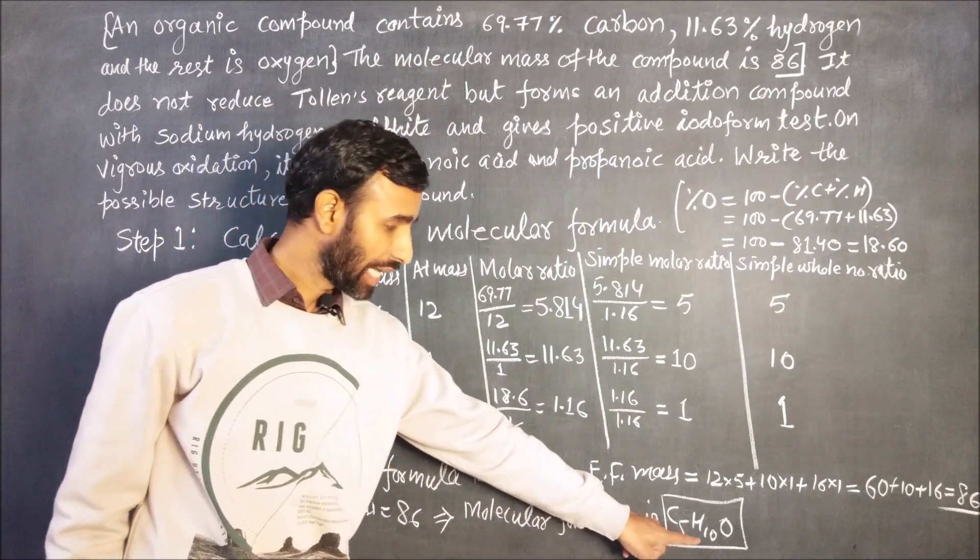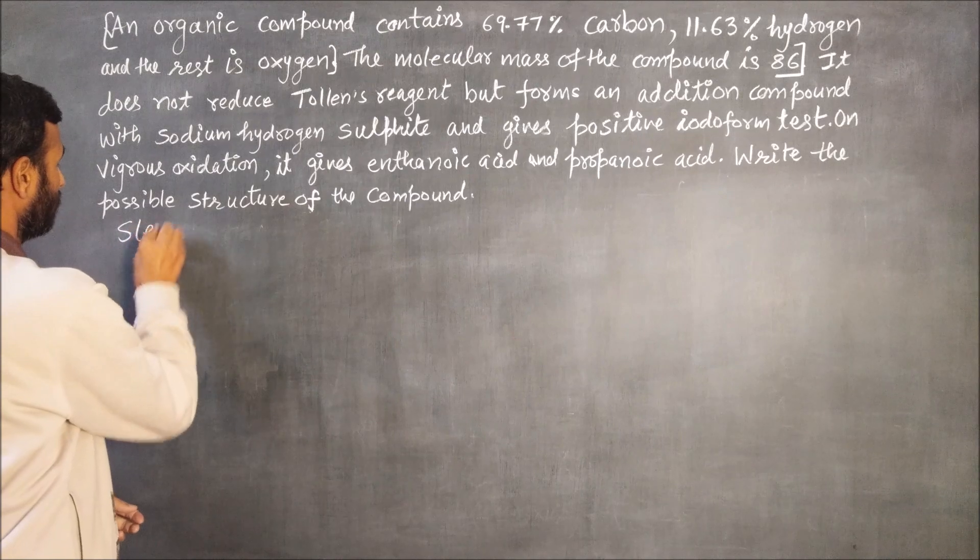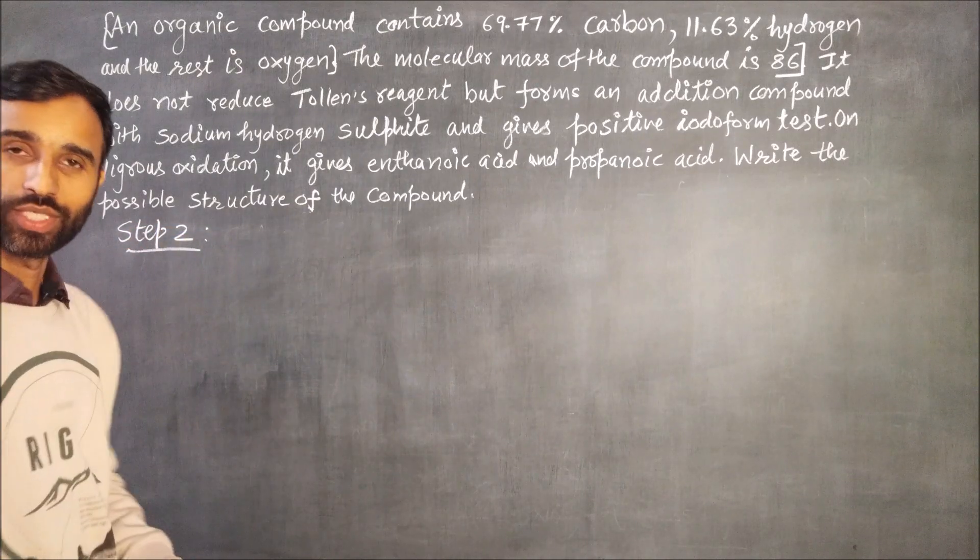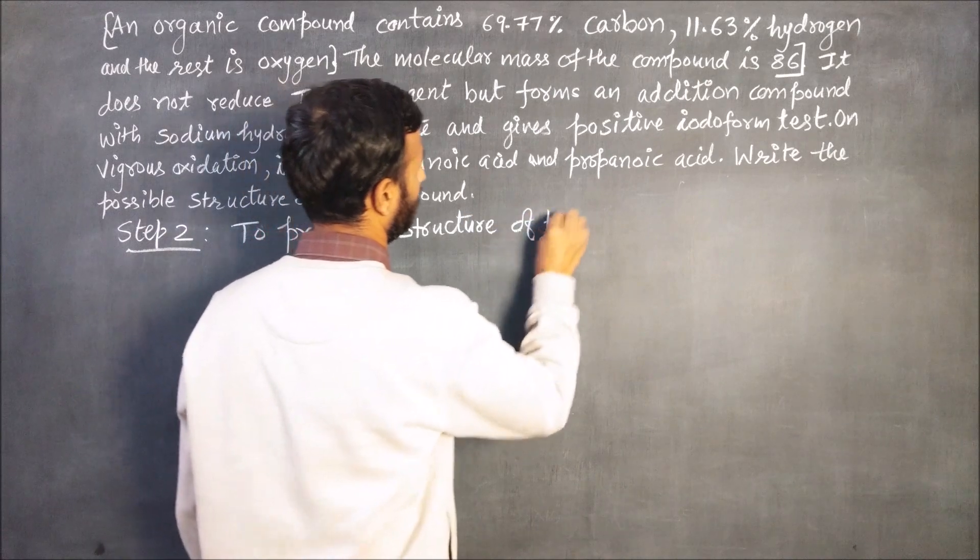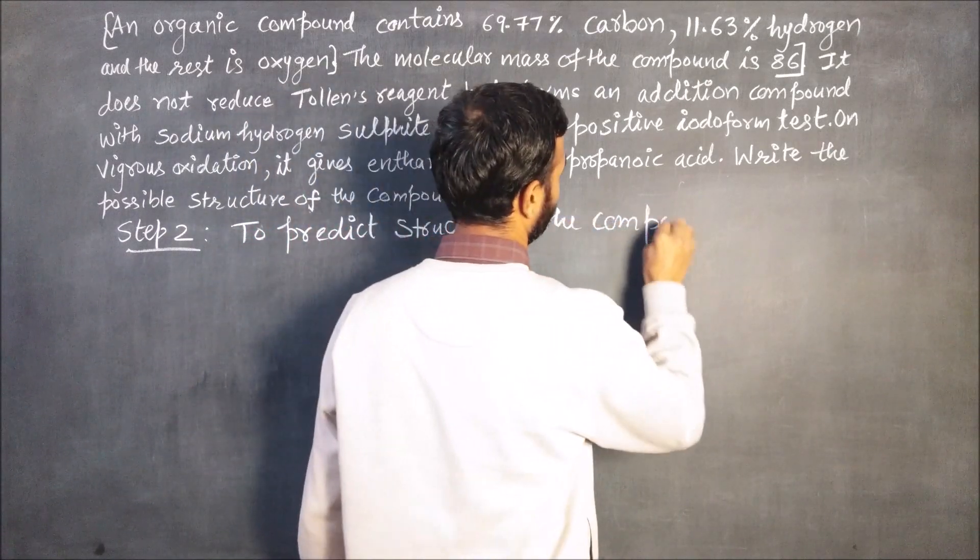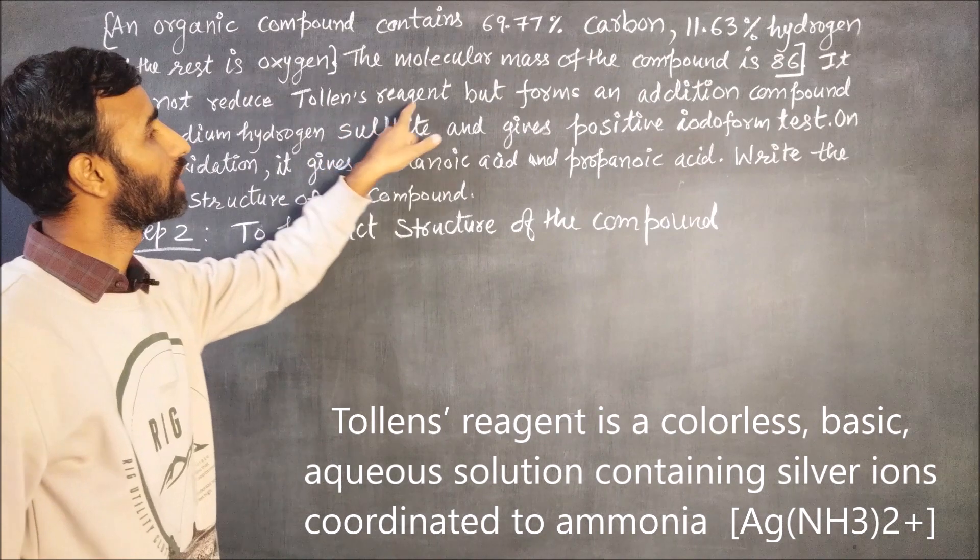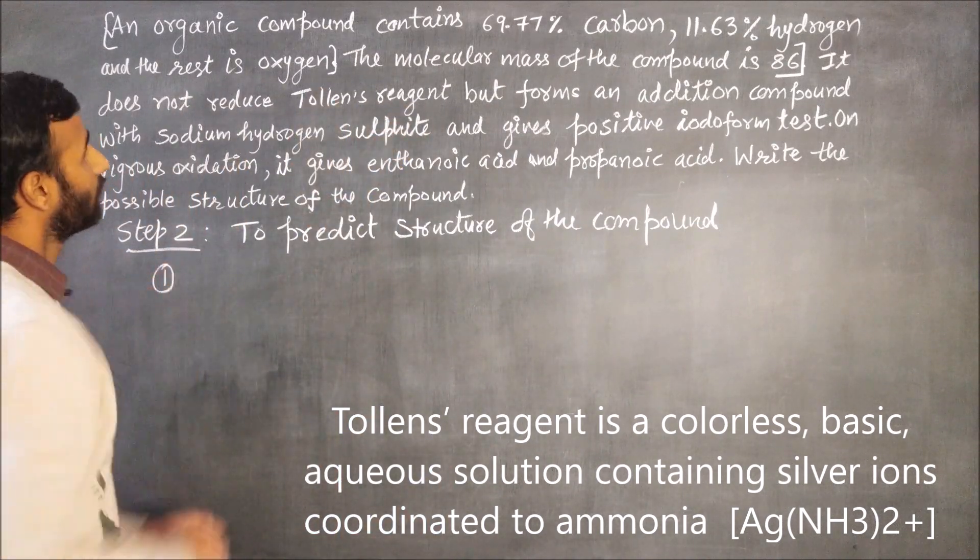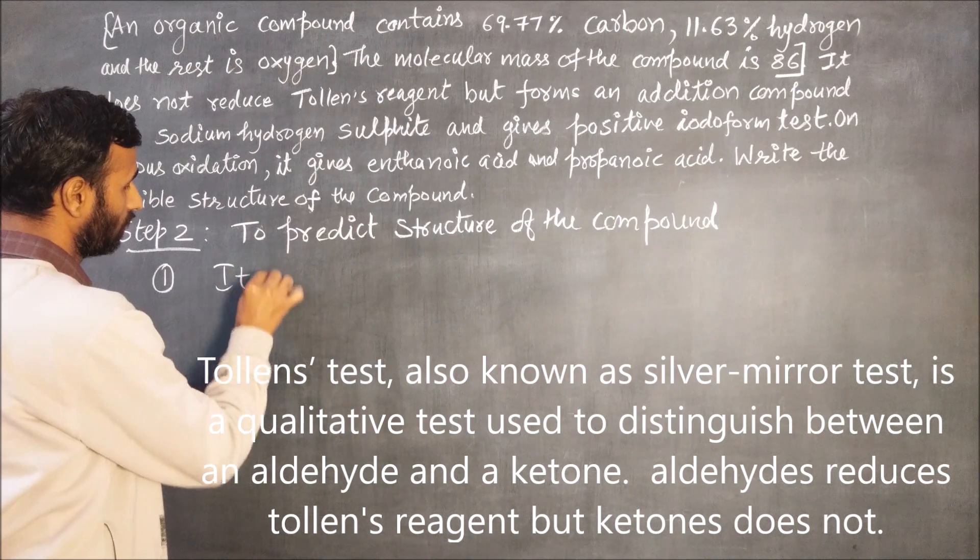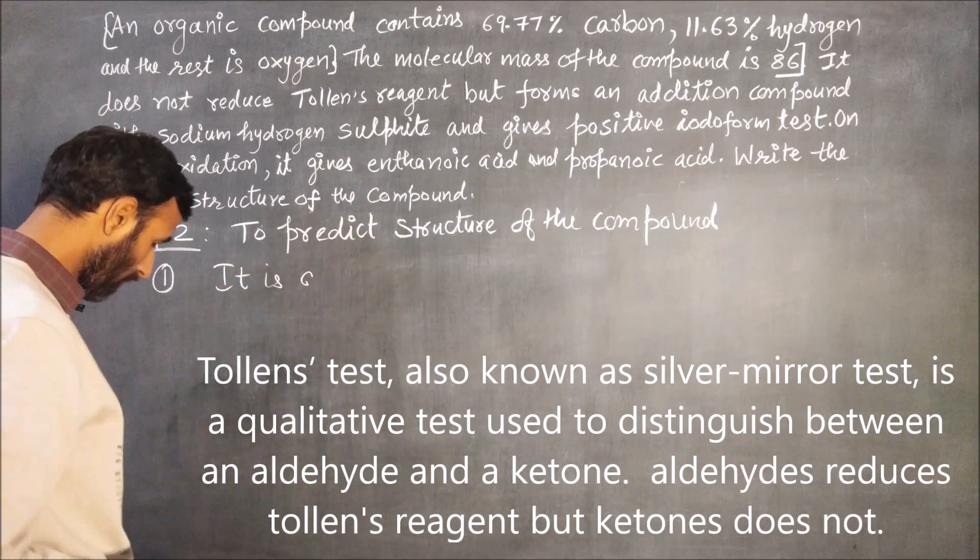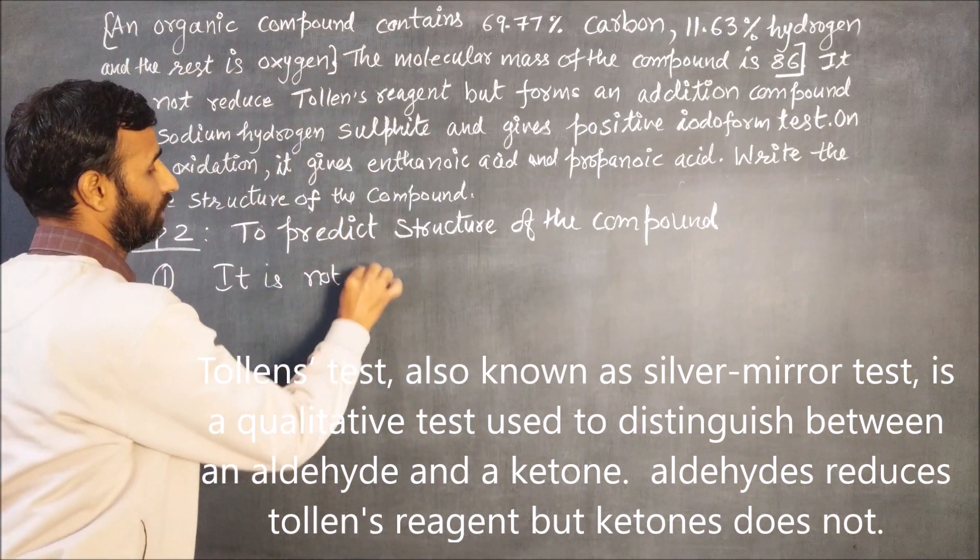This is the first step. Now up to this statement we come to know the molecular formula of the compound. So in molecule there are 5 carbon, 10 hydrogens and 1 oxygen. Now we go further, now step 2. This is actual step from class 12, now to predict structure of the compound. It does not reduce Tollens reagent, so this statement means it is not an aldehyde.